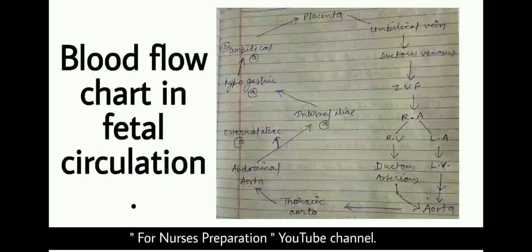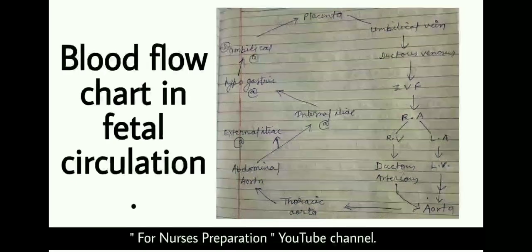Let's revise the blood flow chart in fetal circulation. Fetal circulation starts from the placenta. From the placenta, the umbilical vein carries oxygenated blood to the ductus venosus. Ductus venosus is the first bypass channel of fetal circulation, from where blood bypasses the liver and reaches the IVC, inferior vena cava.